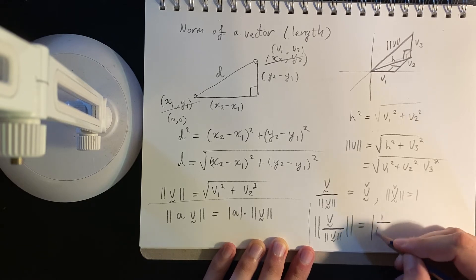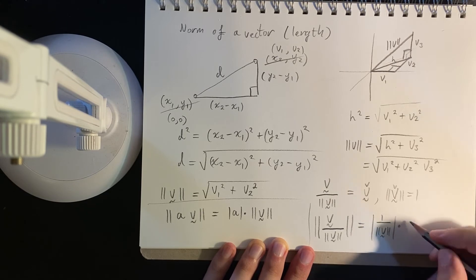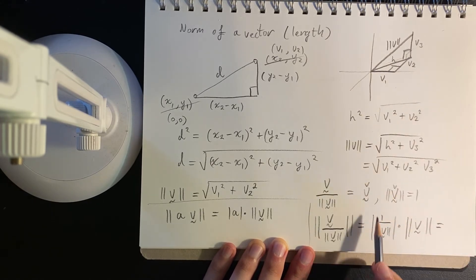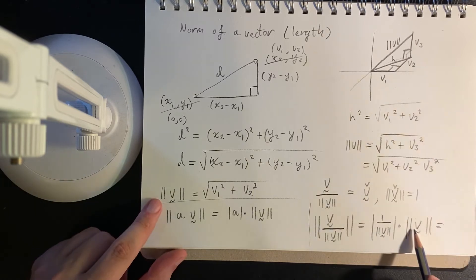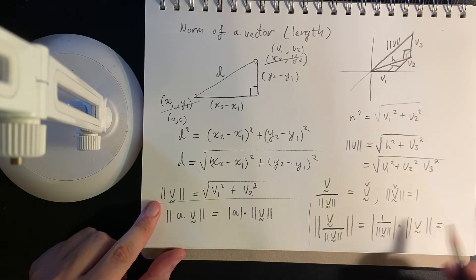So that's 1 over the norm times, and it doesn't matter. The norm is always positive, like the distance is always positive. So it doesn't matter that we have absolute values here. So this is essentially something divided by itself, which is 1.